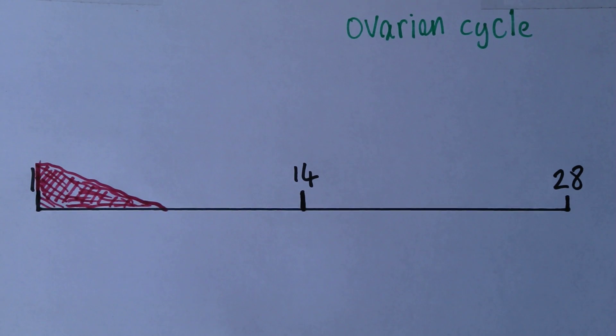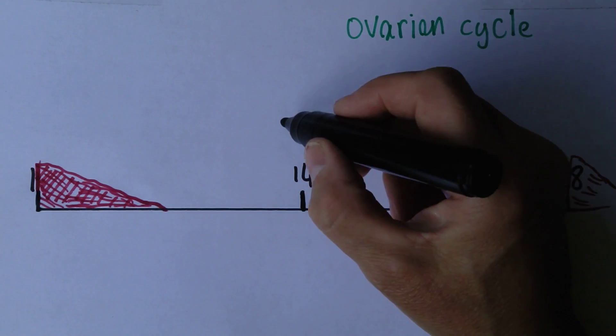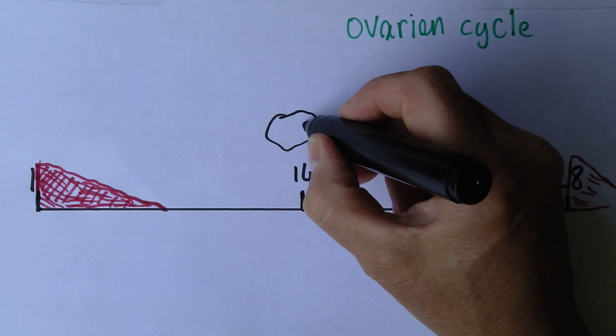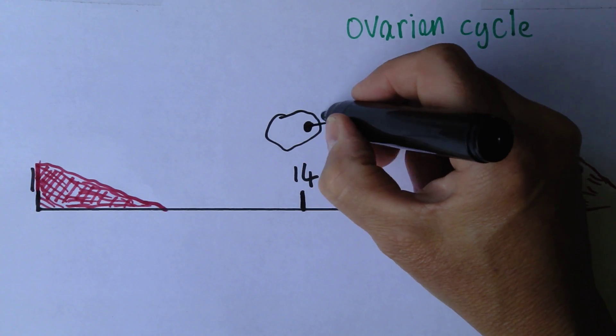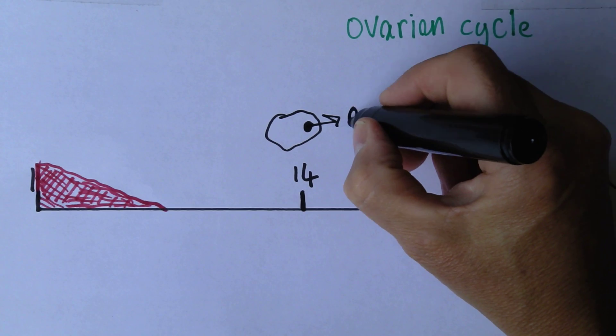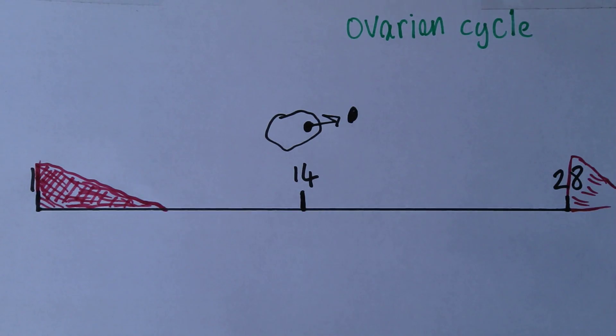Day one is the day that menstruation is first noted, and then the end of the menstrual cycle will be when menstruation occurs again at the start of the next menstrual cycle. So that will be day 28. Now ovulation classically occurs on day 14 of the menstrual cycle. The ovum will be released from the ovary on day 14 of the idealized menstrual cycle.